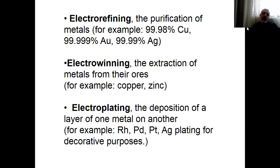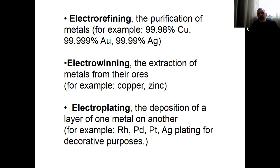When we look at Electro-Plating, it is the deposition of a layer of one metal on another. For example, rhodium is applied on the surface of rings, pendants, bracelets, etc. Palladium can also be employed — platinum, gold, silver plating for decorative purposes. Electroplating can be applied on circuits.